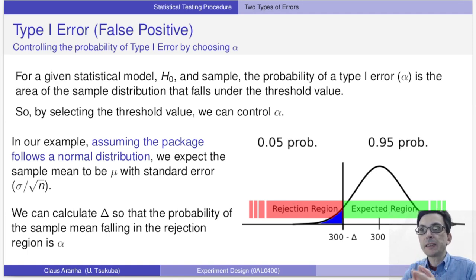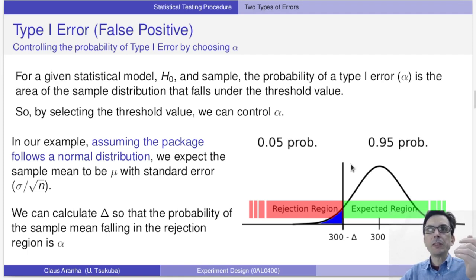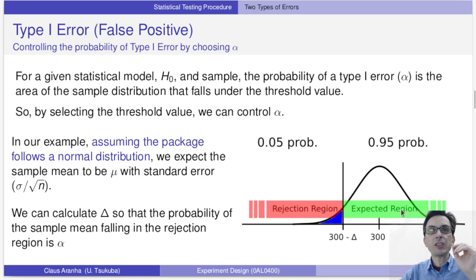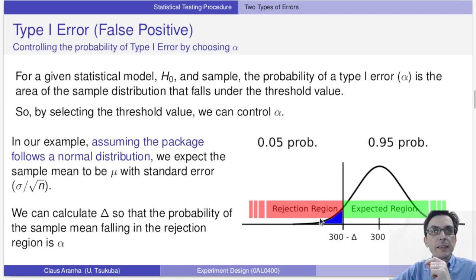The statistic that estimates a parameter is a random variable, so there is a distribution that describes the possible values we can find when we calculate the estimate. From this point of view, alpha — the probability of Type 1 error — is equivalent to the probability that a value from this distribution falls in the rejection region. If we understand the distribution of the estimate, we can control alpha by changing the size of the rejection region. For example, if we assume our estimate follows a normal distribution with mean equal to the true value (an unbiased estimator), we can calculate delta — the size of the rejection region — so that the probability of the estimate being inside it is alpha.